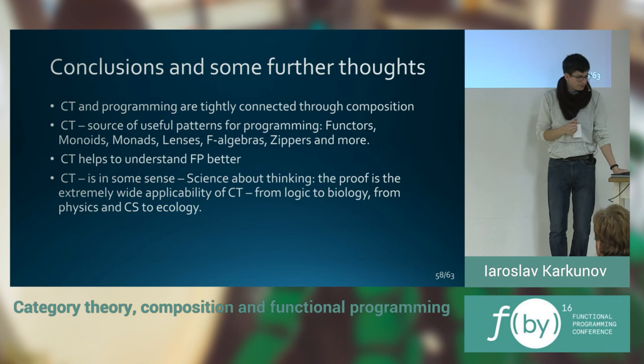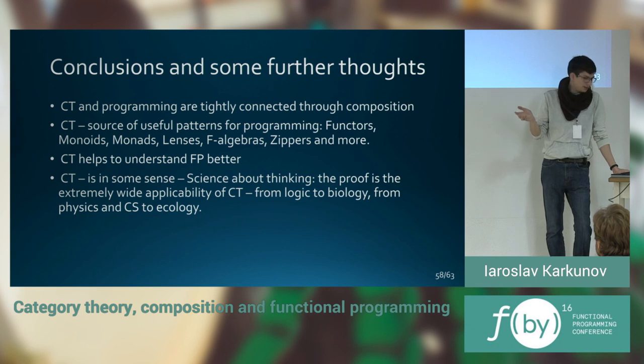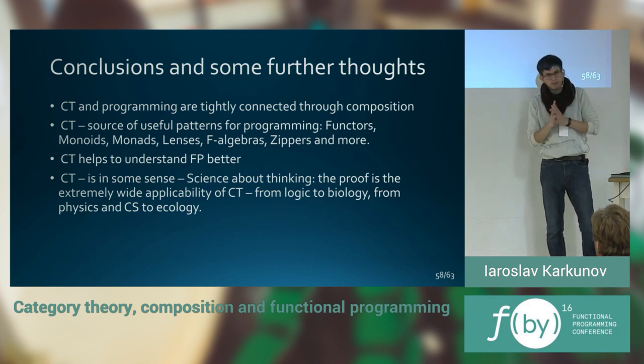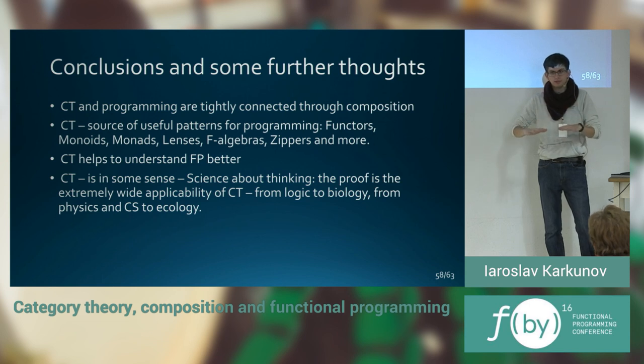Some conclusions. First of all, category theory and programming are very connected, one with another, because of the composition. Because programming is composition, and category theory is based on composition. Category theory is a source of useful patterns for programming. We have seen functors, monoids, but there are also monads, lenses, F-algebra, zippers, and more and more.